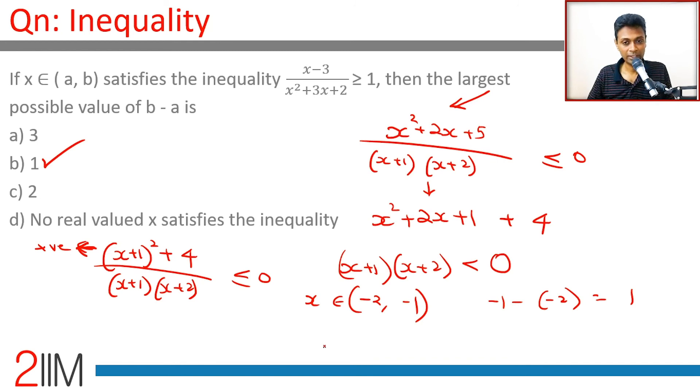Then pick out the fact that the numerator is a square plus a number, then worry only about the denominator. Be careful about the denominator not going equal to 0, then find the range, then substitute and find b minus a.